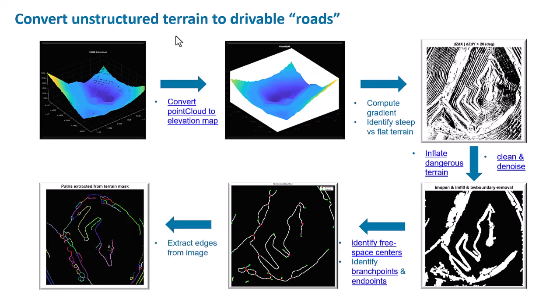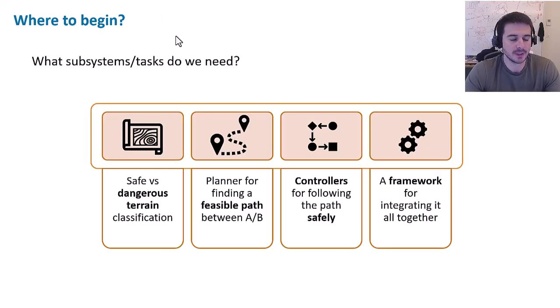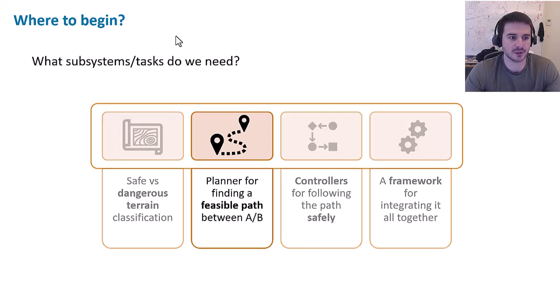Lastly, we run an algorithm that extracts the edges from this image, so now we have a large set of edges — or a set of roads — in our space. The next part is finding a way to actually use that information to go from point A to point B, so we will focus now on the planners.